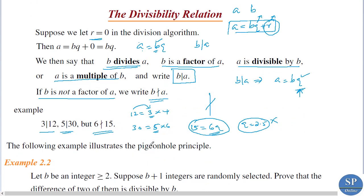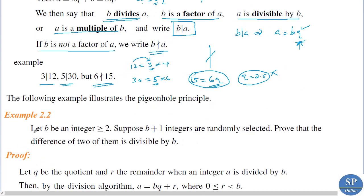The following example illustrates the pigeonhole principle. Let b be an integer greater than or equal to 2. Suppose b plus 1 integers are randomly selected. Prove that the difference of two of them is divisible by b.